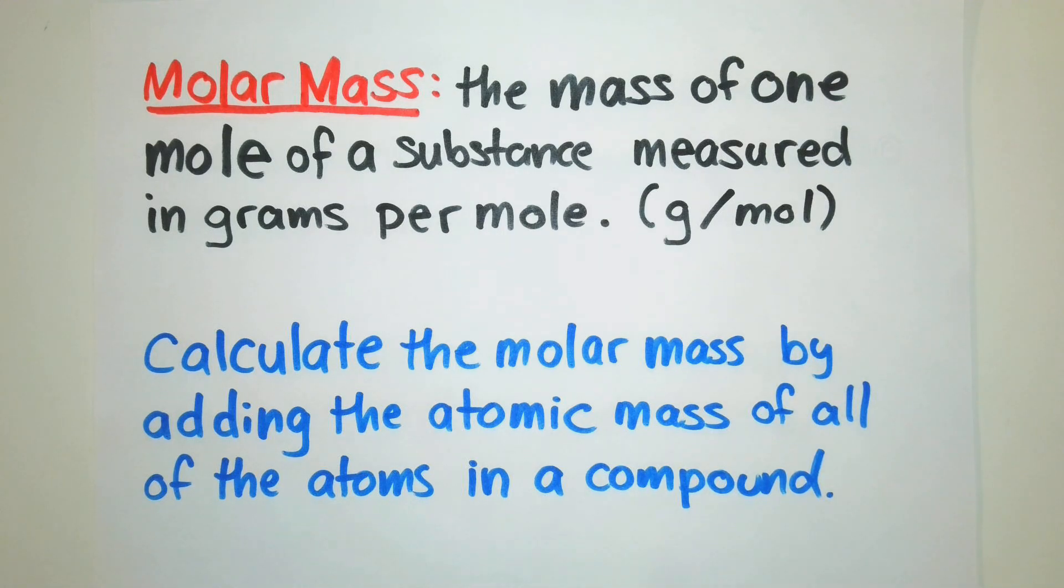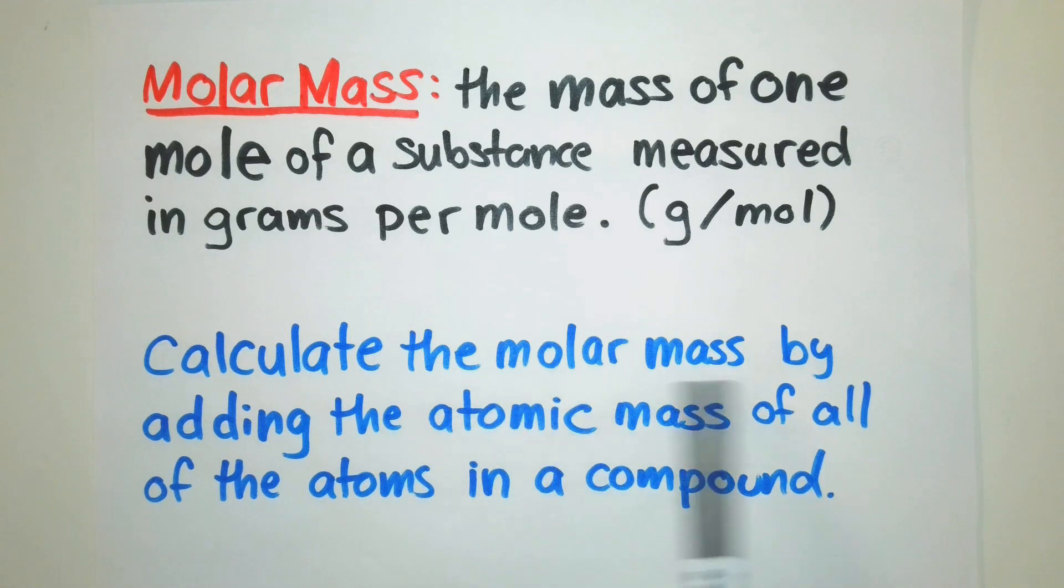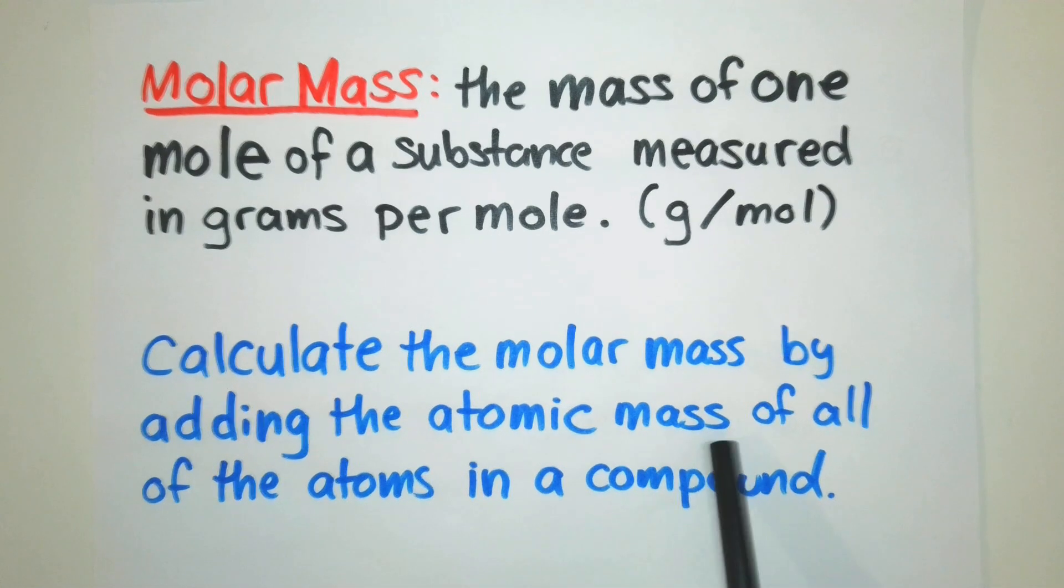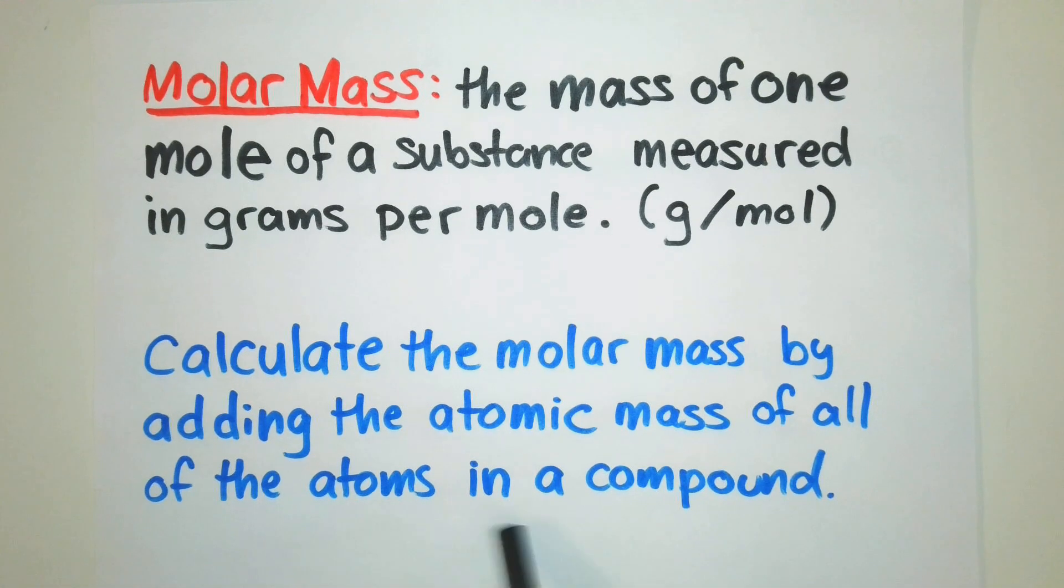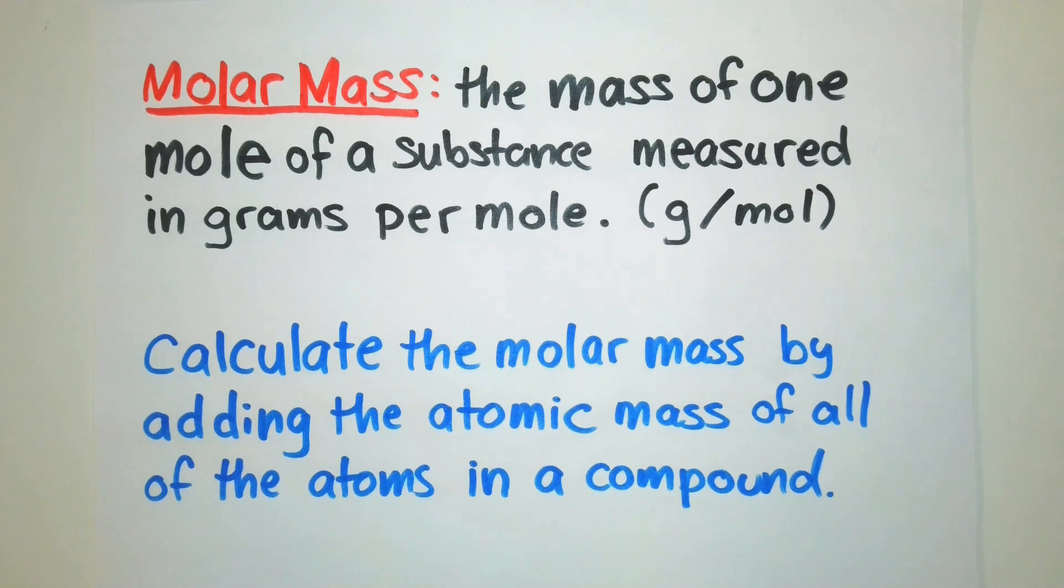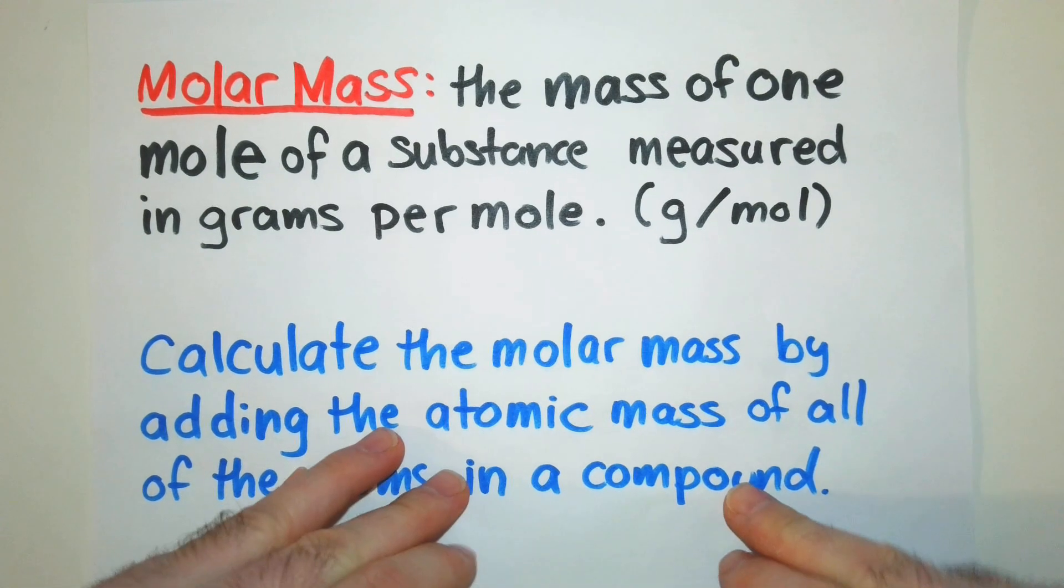In doing this, we calculate the molar mass by adding the atomic masses of all of the atoms in a compound. You're going to need to know how to write chemical formulas and determine how many atoms of each element is in that chemical formula. And if you need a review on that, please check out my writing chemical formulas video.